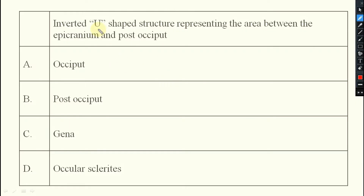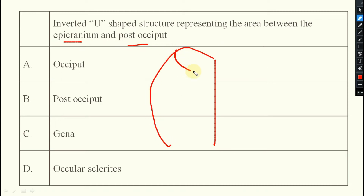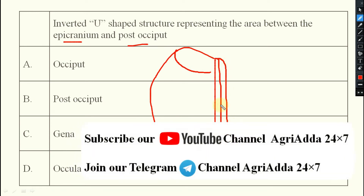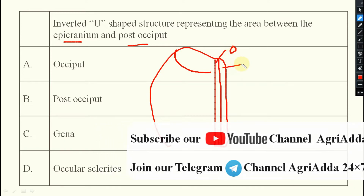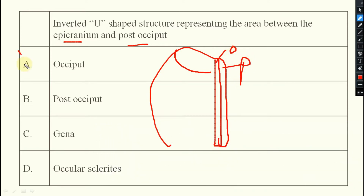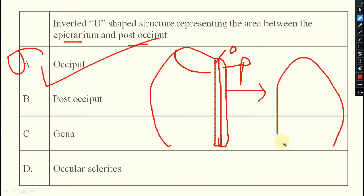Next question: the inverted U-shaped structure representing the area between the epicranium and post-occiput — what is it called? Looking at the figure: this structure is known as the occipital, and this is the post-occipital. The answer is option A — occipital. It is inverted U-shaped because viewed from the side it looks like an inverted U.